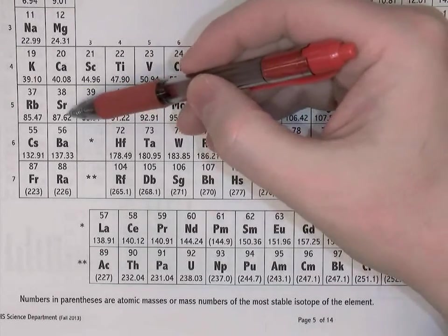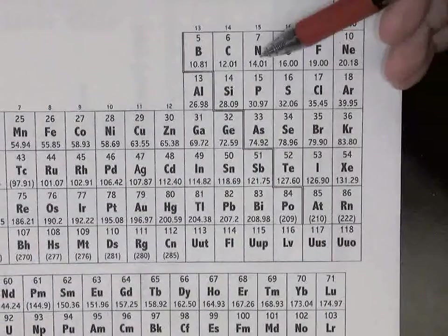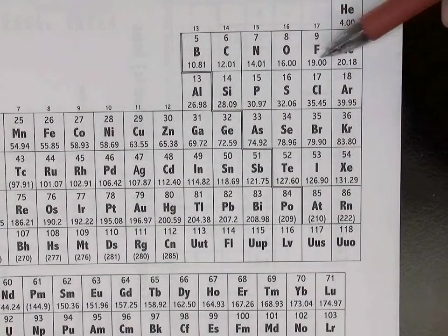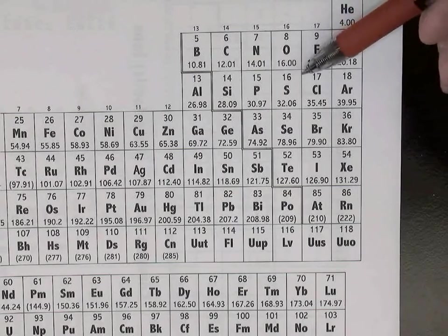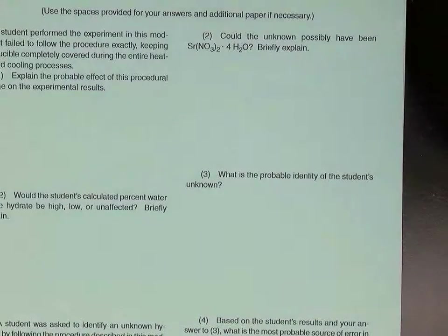Strontium's atomic mass is 87.62 AMUs. And nitrogen is 14.01 AMUs. Oxygen is 16.00 AMUs. And hydrogen is 1.01 AMUs, atomic mass units.